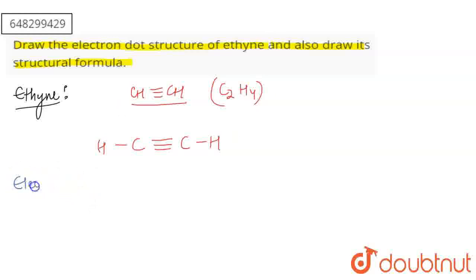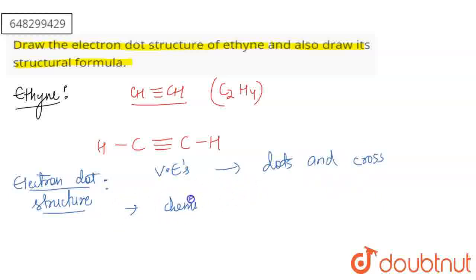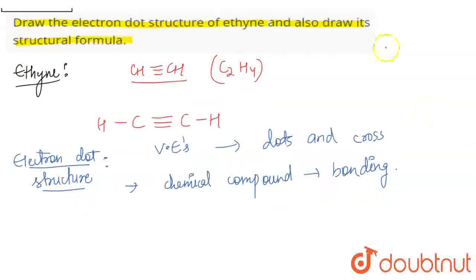Now you can draw the electron dot structure. You need to understand the electron dot structure. How I just drew the atoms. We use the electron dot structure in which we use the dot and cross method and then we show the bonding.